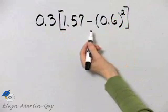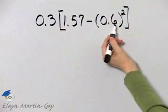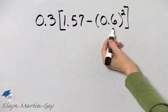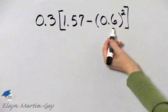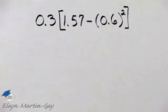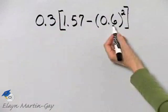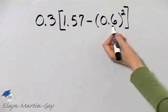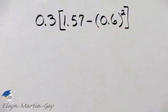Within there, notice we have subtraction and an exponential expression. The exponential expression is higher in the order of operations, so we'll evaluate 0.6 squared first.